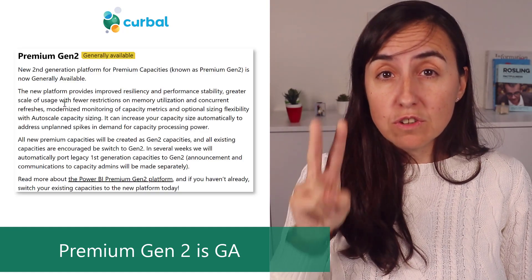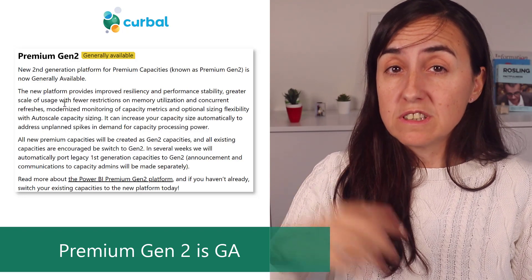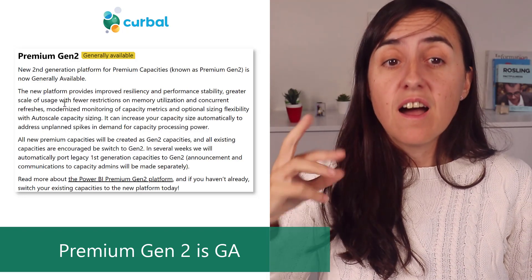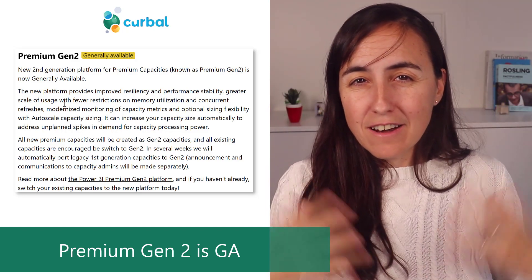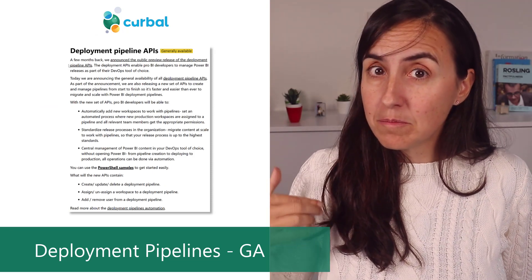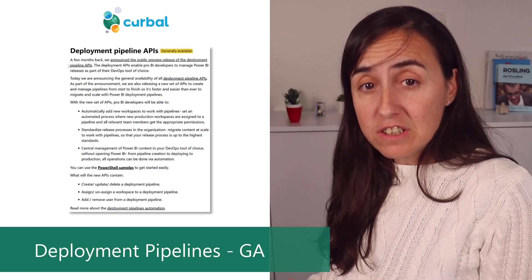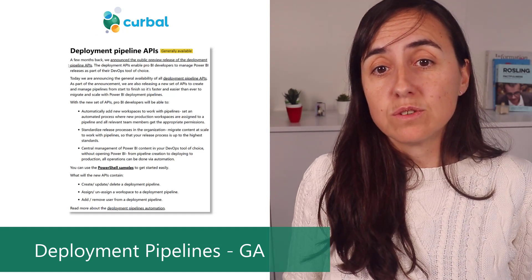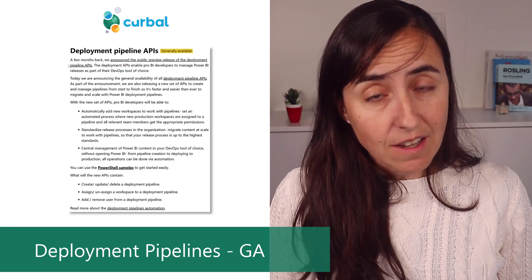Two things are generally available. Premium Generation 2 is now GA, meaning it's ready for production — they are happy with the development. And deployment pipelines API has also been made generally available. Not only that, they've added a few functions — a new set of APIs to create and manage pipelines. If you are into that, make sure you check that out.